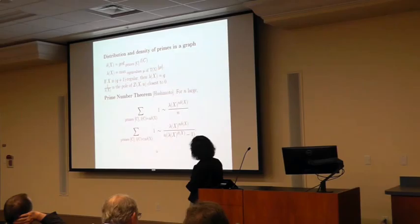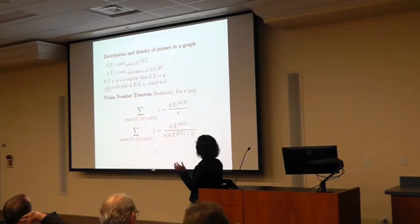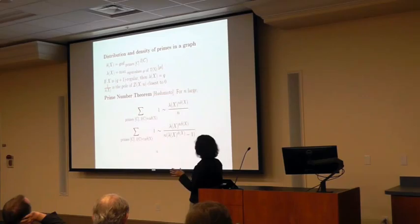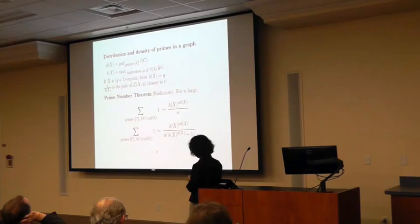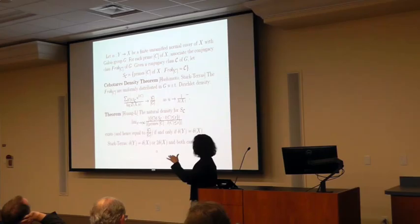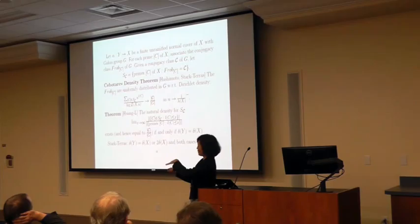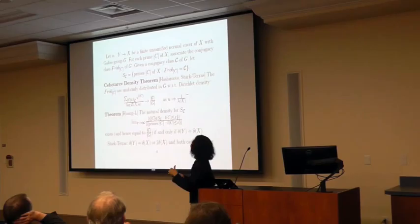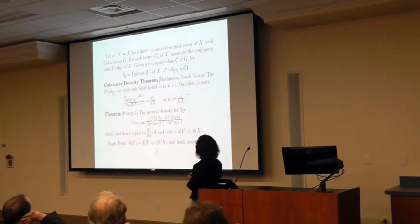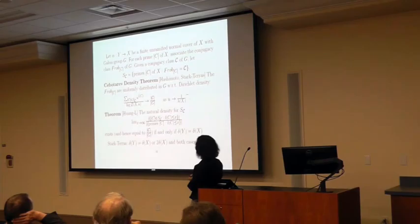The prime number theorem for graphs, proved by Hashimoto, says: if we count the number of primes with length equal to n times δ, we can express that in terms of λ_X and δ. If we look at primes with length strictly less than n·δ, that number is asymptotically a fraction of a power of λ_X. Another important theorem analogous to the Chebotarev density theorem in number theory: if we have a finite extension — a finite Galois cover — of a number field, there is a total prime density theorem. We can do something similar for graphs.